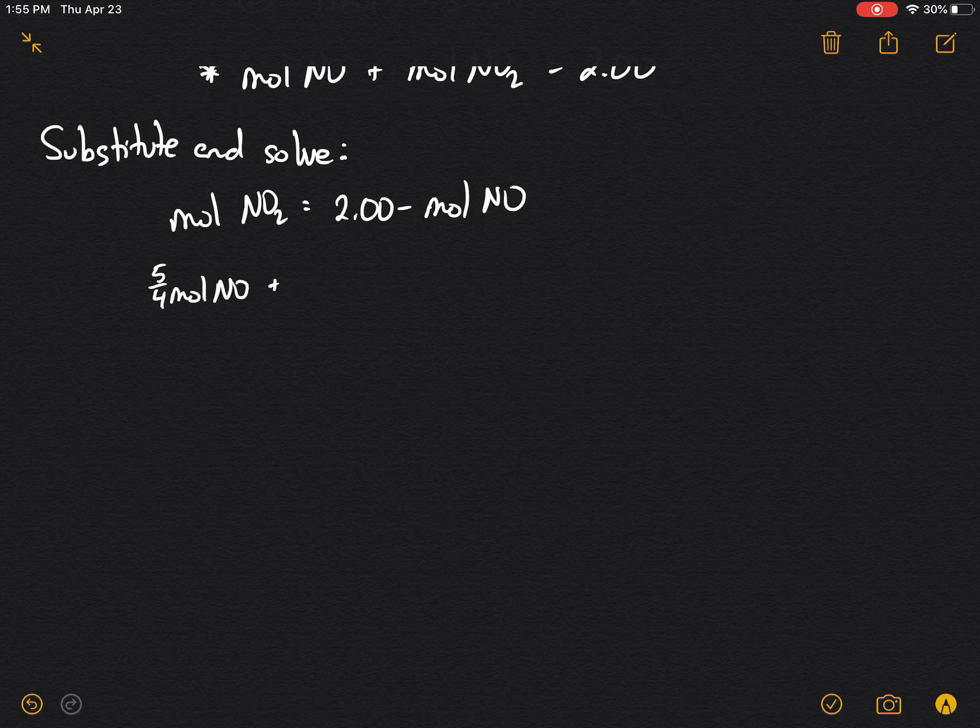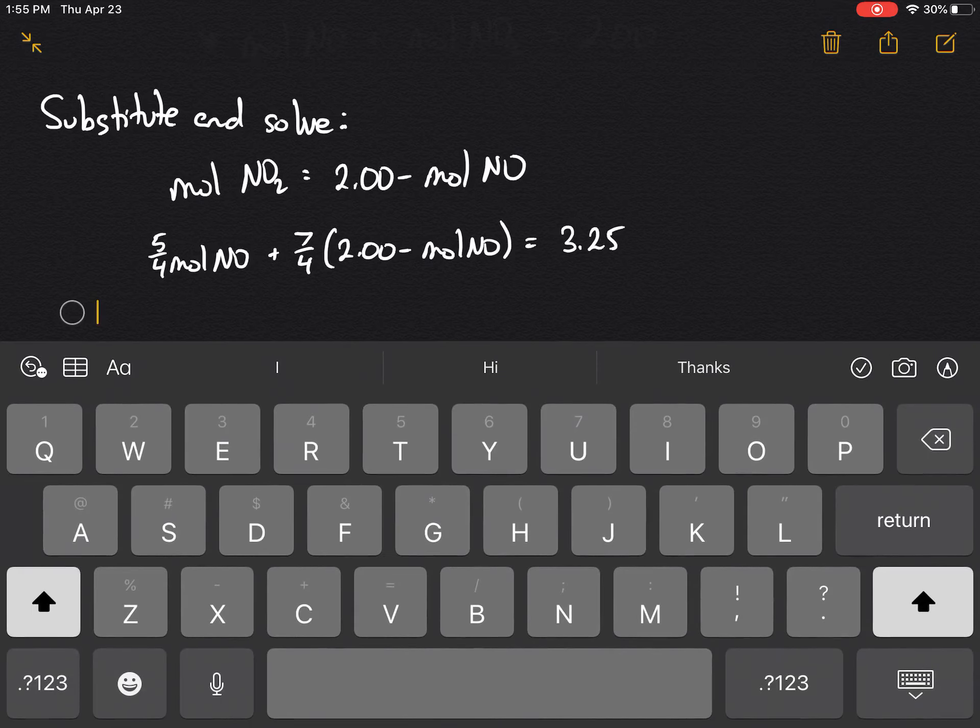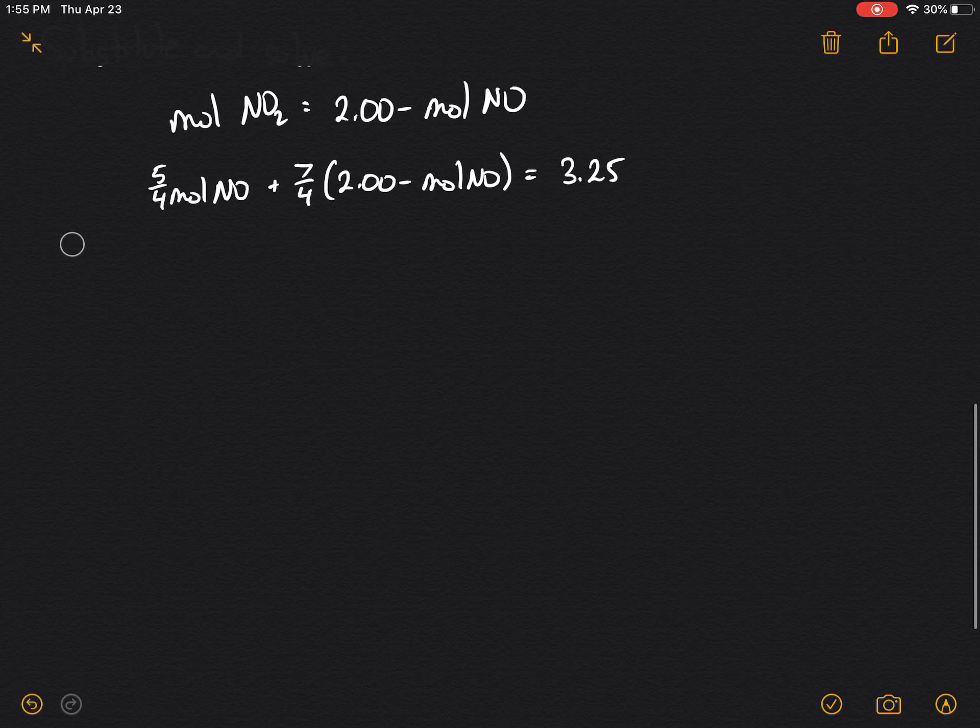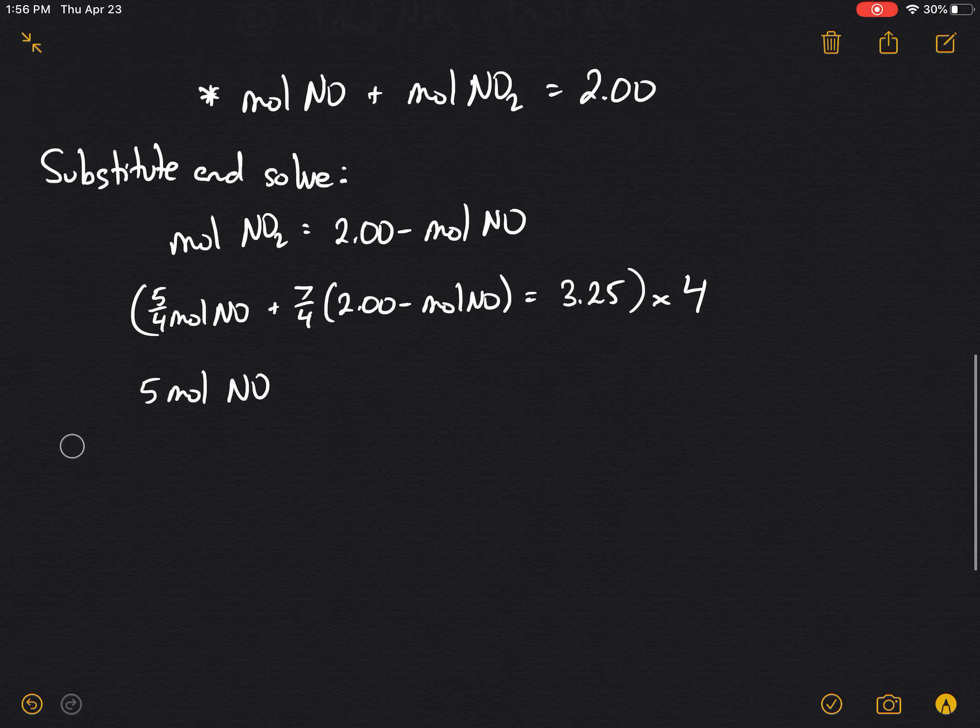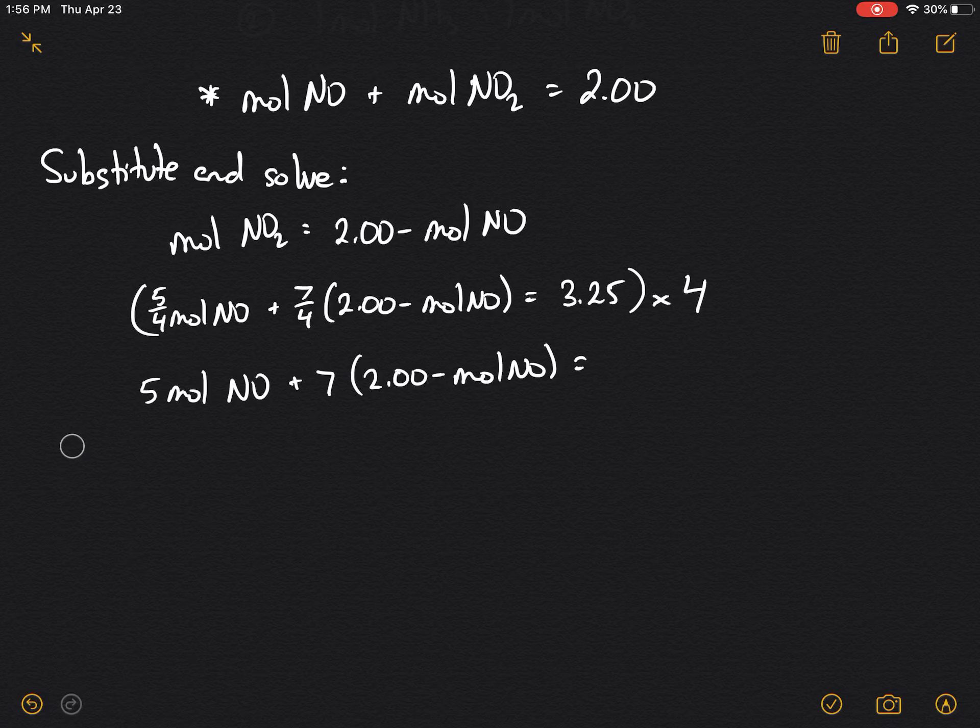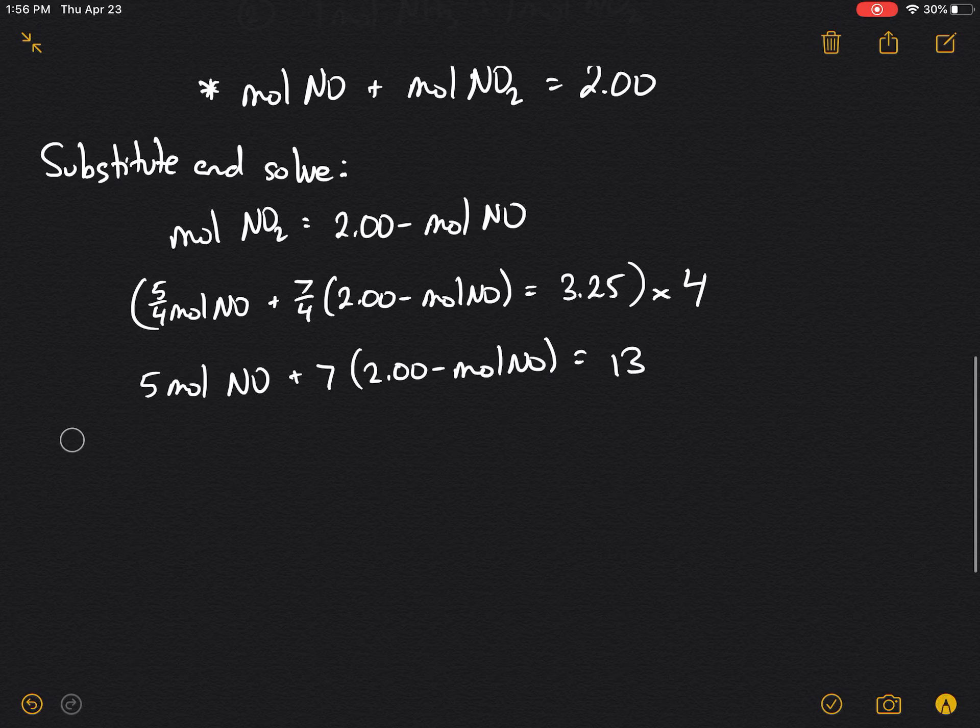So we got 5/4 mole of NO plus 7/4 times (2.00 minus mole of NO), and this is going to be equal to 3.25. And if we multiply everything by 4, we'll get 5 moles of NO plus 7(2.00 minus mole of NO) is equal to 13.